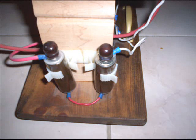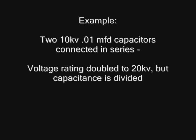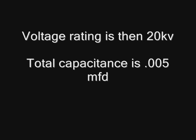My Tesla coil uses two 10,000 volt capacitors connected in series which gives a 20,000 volt rating. But this also divides the capacitance value. Each capacitor has a 0.01 microfarad rating. In series, the total capacitance is then 0.005 microfarad.